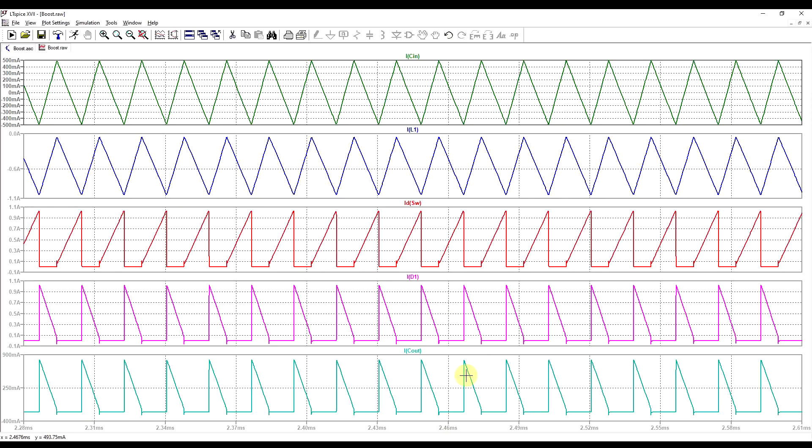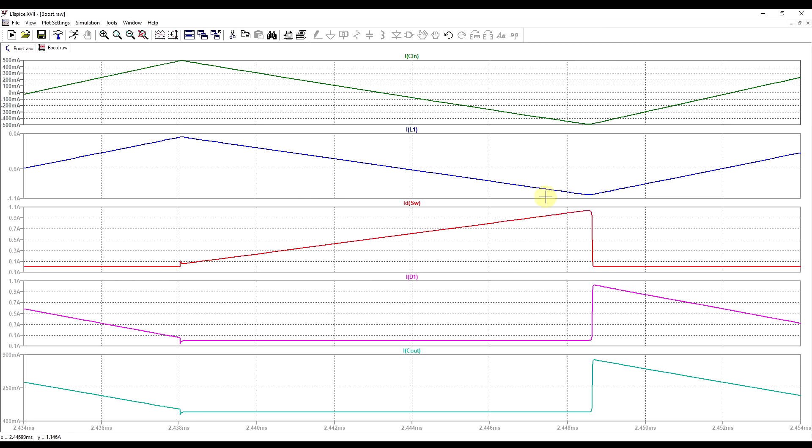we mainly see two kinds of waveforms. So on our input capacitor and inductor, we see a nice triangle shape waveform. Whereas on the switch, diode, and output capacitor, we see this trapezoid shape. So we can see the turn on turn off phases in the switch.